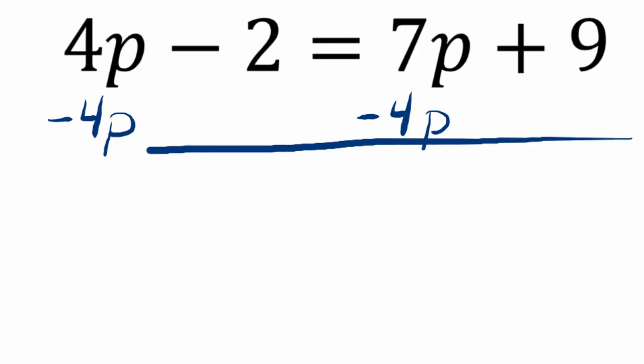because if I subtracted 7p, 4p minus 7p, that would give you negative 3, and I want to avoid that. So here,